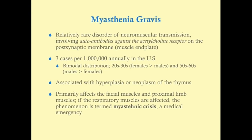Myasthenia gravis primarily affects smaller musculature — facial muscles and sometimes proximal limb muscles. On the USMLE, expect presentations like difficulty keeping the eyes open due to weakness, trouble talking due to jaw muscle weakness, and difficulty chewing. In severe cases, respiratory muscles are affected, causing shallow, rapid breathing — a phenomenon termed myasthenic crisis, which is a medical emergency.